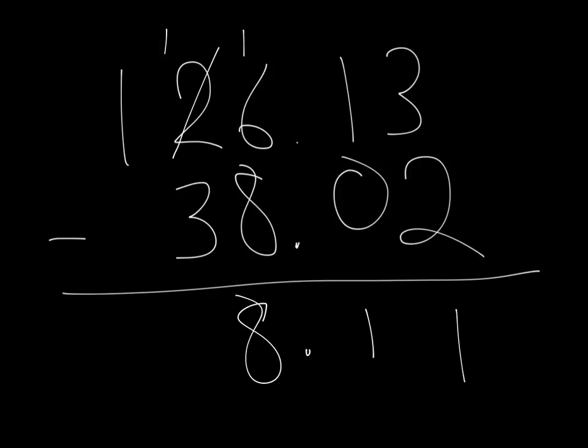One take away three. Can I do that? No, I can't. I need to change that to a zero. And now it's now eleven. Eleven take away three, which gives me an answer of eight. And I have nothing else in that column, so my final answer is 88.11.